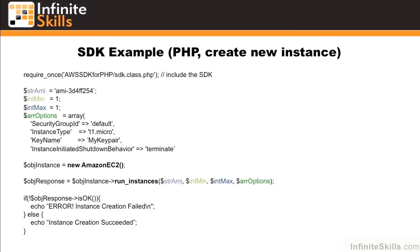Here's an SDK example in PHP of creating a new instance. Up at the top you can see that we require the SDK. We set up some parameters for it, we instantiate a new instance of an EC2 object, and then we simply call a method called run_instances, passing in the variables that we described before.